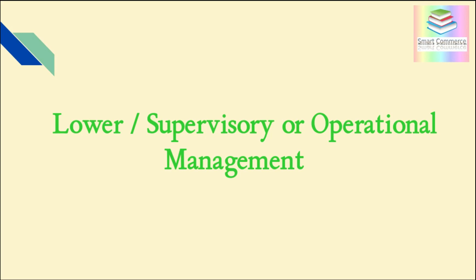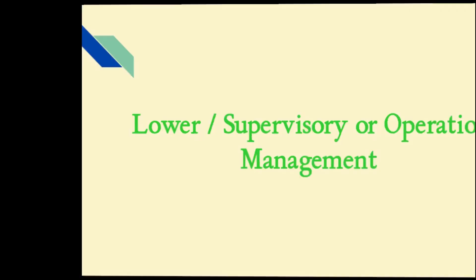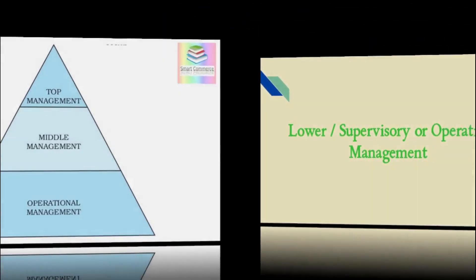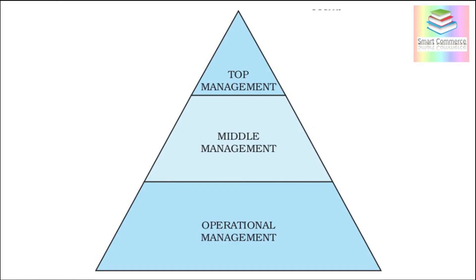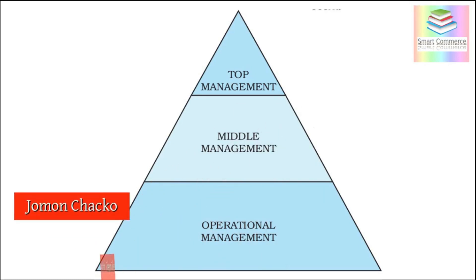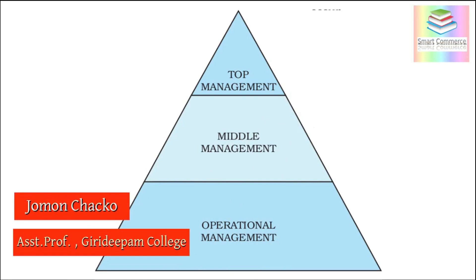Let's conclude the episode. There are three levels of management: number one, top management; number two, middle management; and number three, lower management, or supervisory, or operational management. We will be back soon with the next episode of our classes. Thank you.